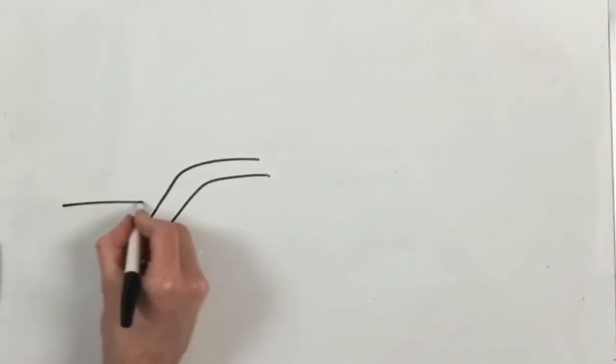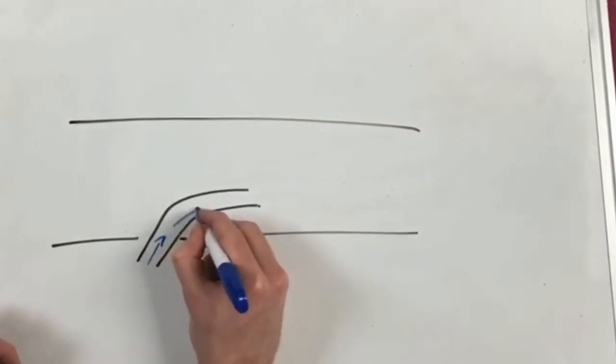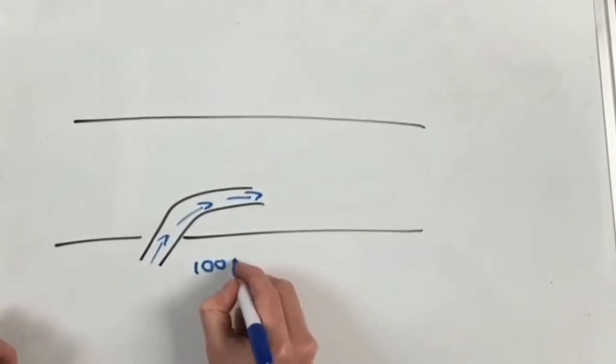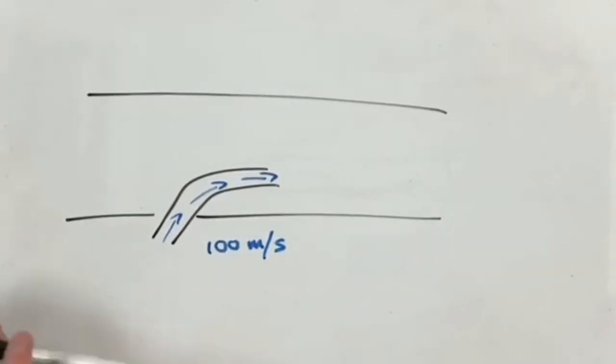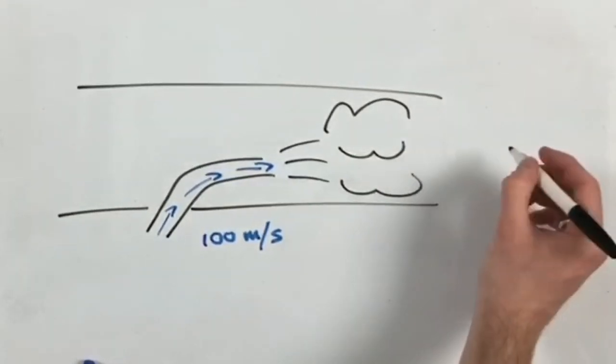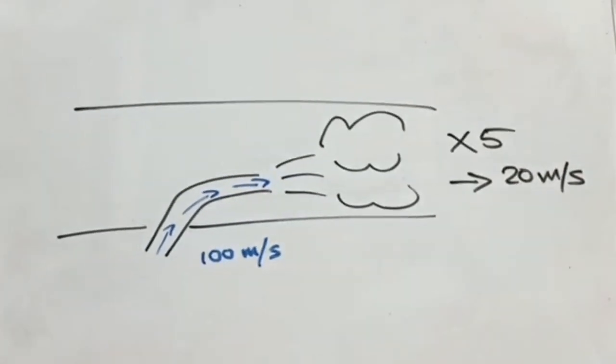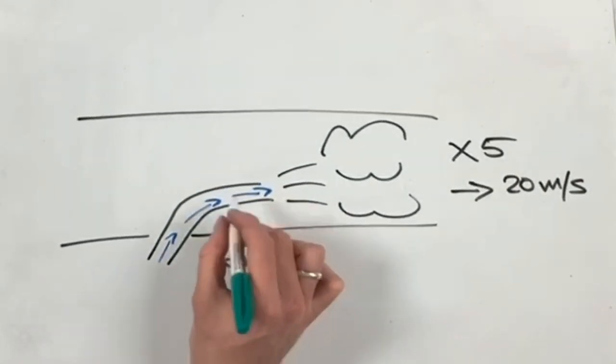To understand it, we can have a look at this other diagram imitating the experiment. So if we imagine the air from the gun traveling at 100 meters per second and mixing with 4 times as much stagnant air that is just sitting in the tube. According to the conservation of momentum, the resulting airflow leaving the tube will be 5 times the initial air mass and therefore will travel at 20 meters per second.